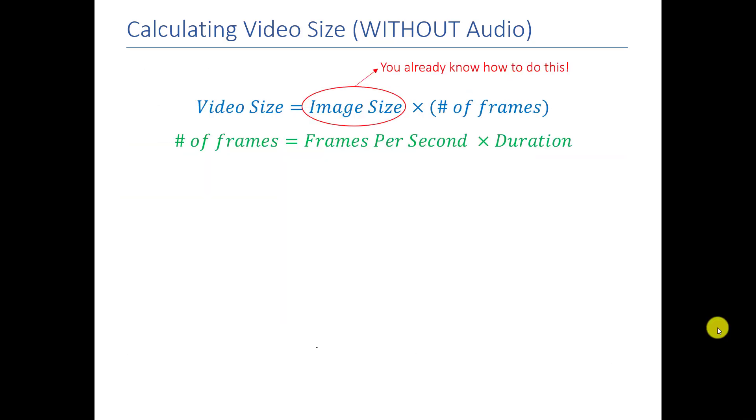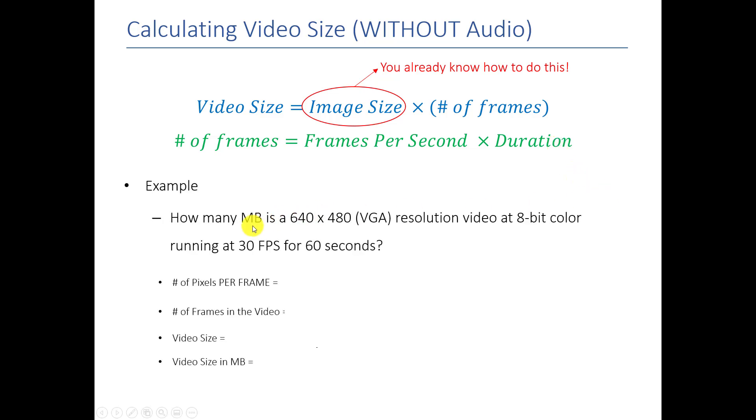So putting it all together, we now know how to calculate the size of a video. A video is nothing more than the size of one image times the number of images in our video. And the number of frames is basically the frames per second times the number of seconds. So to practice with this, I'm going to give you this problem. Let's say we have a 640 by 480 resolution video at 8-bit color running on 30 frames per second for 60 seconds. Why don't you go ahead and take some time and see if you can calculate the size of that video in megabytes.